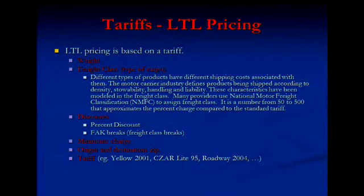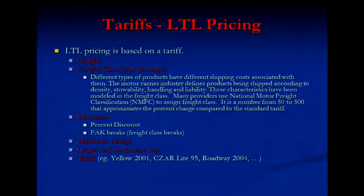For an LTL tariff, you need to tell the software five things essentially: a weight, a freight class, origin zip, destination zip, and your discount. Different products have different shipping costs — the motor carrier industry has defined something called freight class according to density, stowability, handling, and liability. These characteristics are converted into a freight class number from 50 to 500 that approximates the percentage charge compared to the standard tariff. The freight class book is about this thick. For example, a steel auto part on a pallet, shrink-wrapped, might be class 75, but in a box it may be class 200. You've got to define your product, look it up in the book, and write down the freight class.